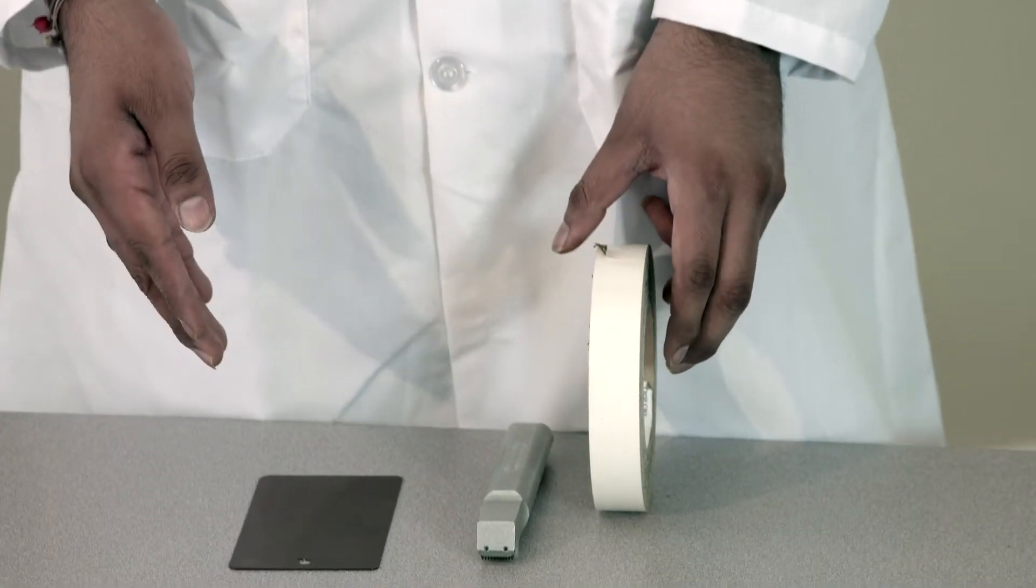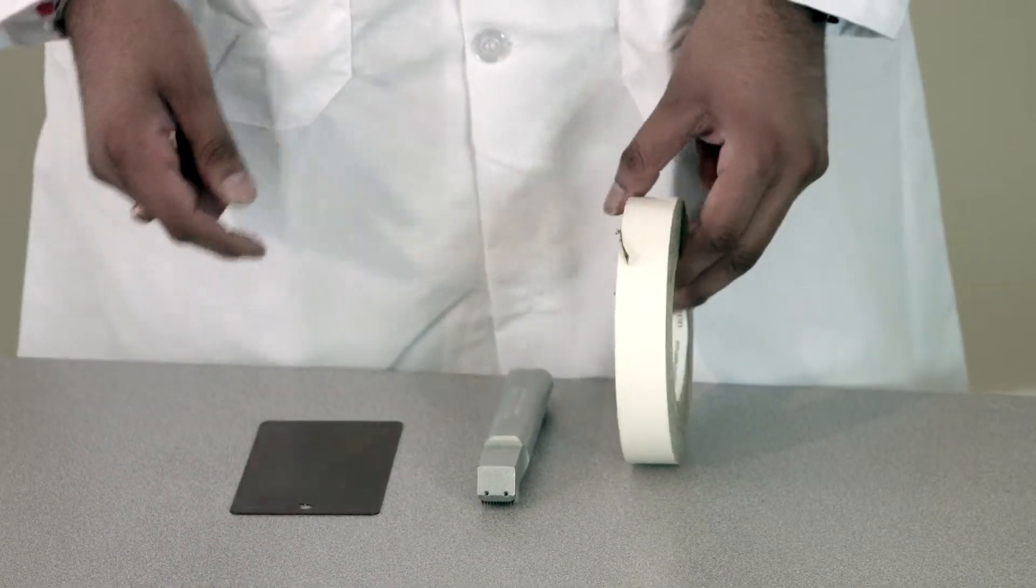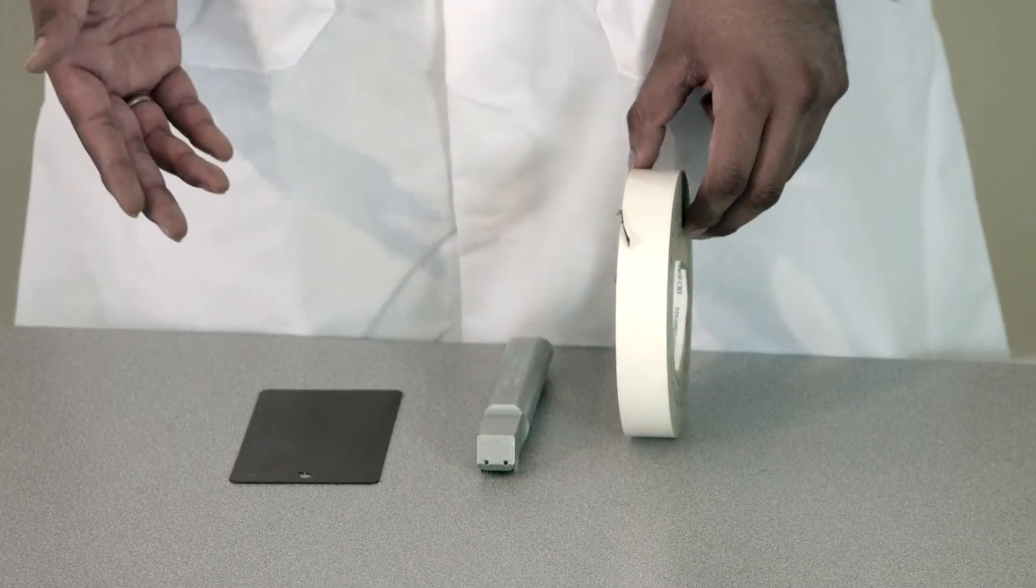If there is paint coming off with the tape, that means it didn't pass the adhesion test. If it doesn't come off, that means it passed the adhesion. There is good adhesion between the coating and the part.